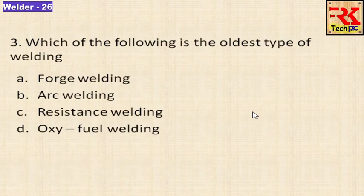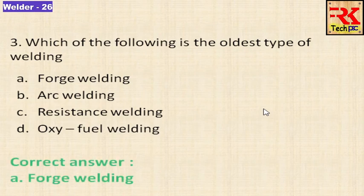Which of the following is the oldest type of welding? Options are forge welding, arc welding, resistance welding, and oxy-fuel welding. The answer is forge welding.